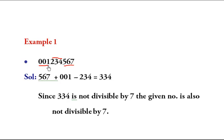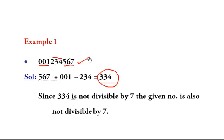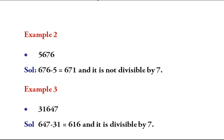Now we add the alternate sets and deduct the remaining: 567 + 001 - 234 = 334. Now we check if 334 is divisible by 7. Seven fours are 28, we are left with 54, which is not divisible by 7. Hence 334 is not divisible by 7, so the complete number 1234567 is not divisible by 7.